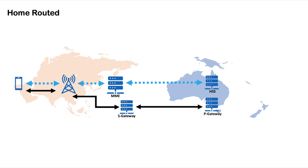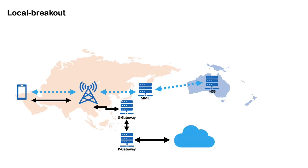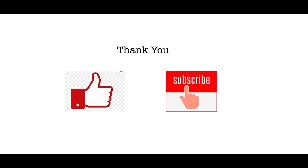Now let's see what local breakout is. In this roaming method, the home network is only used for the control session, where the subscriber's identity and subscription are identified and validated. Once that is done, the data session is handled by the visited network's P-gateway itself. With this I'll close the video — I hope it was useful for you. Please consider subscribing to the channel if you haven't already. Thank you so much for your time. Have a nice day ahead and happy learning.